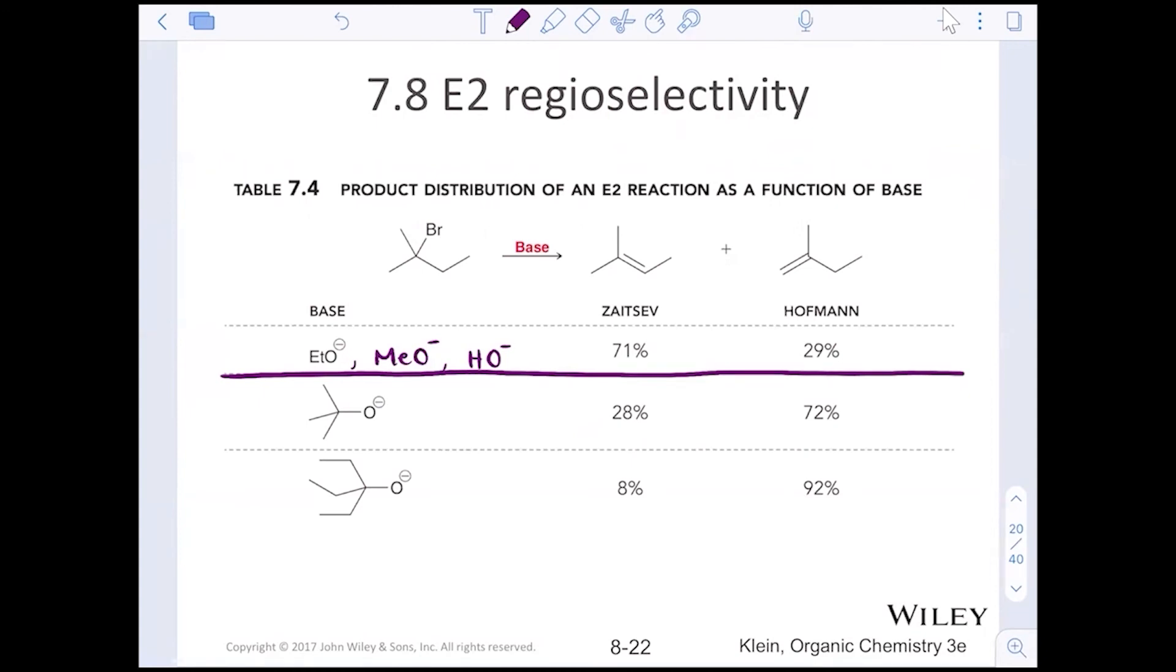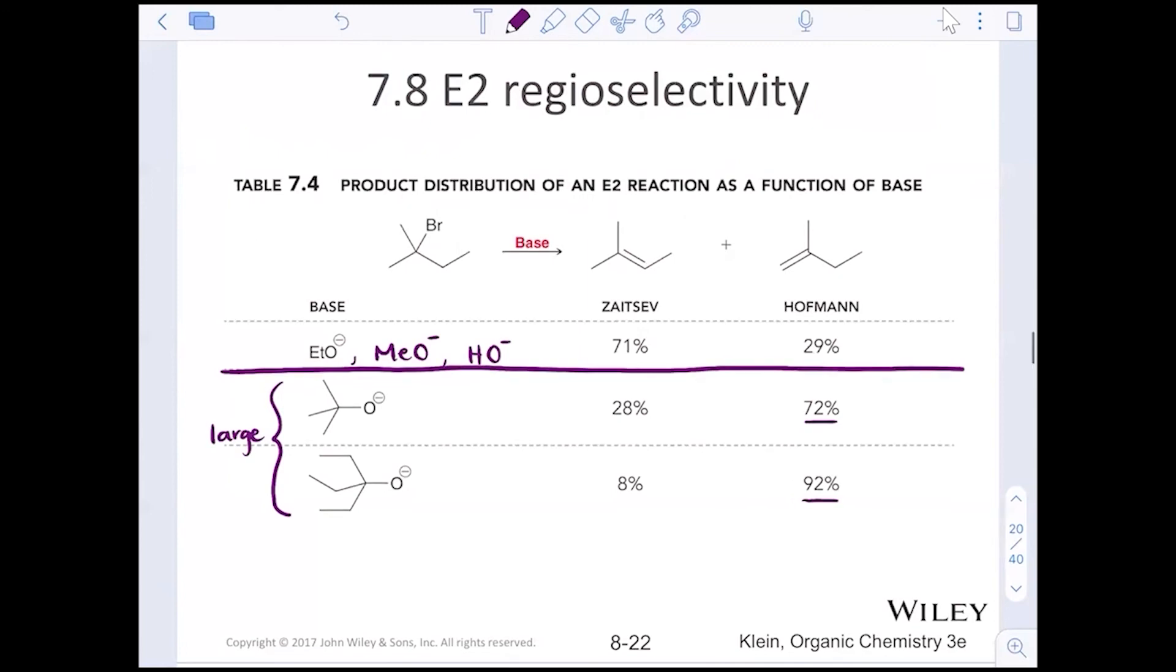If we want a more substituted alkene, we'll choose a smaller base. If we want a less substituted alkene, we'll go with the Hoffman base, the larger base. And so notice that these are very large molecules and all of a sudden we start favoring our Hoffman product. The Hoffman becomes major.